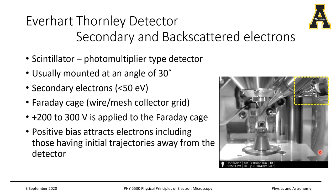The ET detector is basically a scintillator-photomultiplier type of detector. A scintillator is a material that generates photons when electrons are incident on it, and a photomultiplier is something that multiplies the number of photons — I will talk about that in the next few slides.